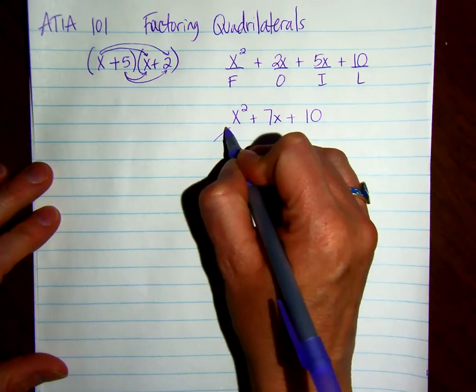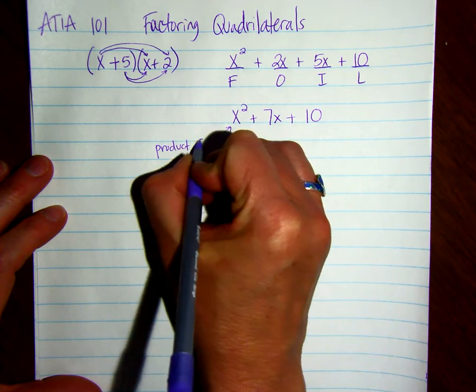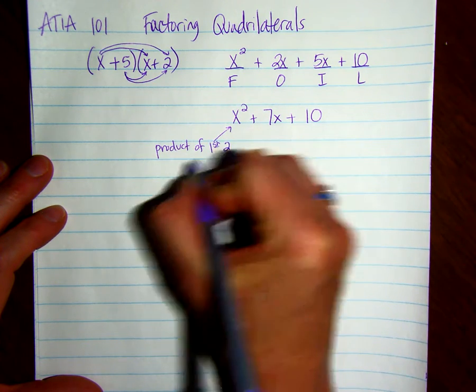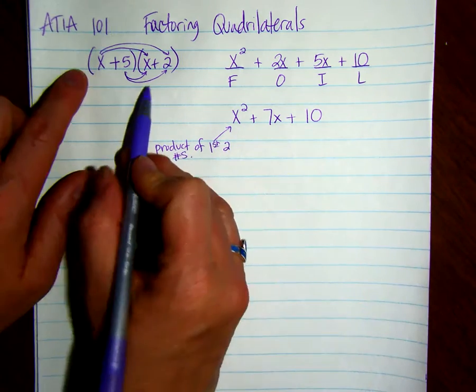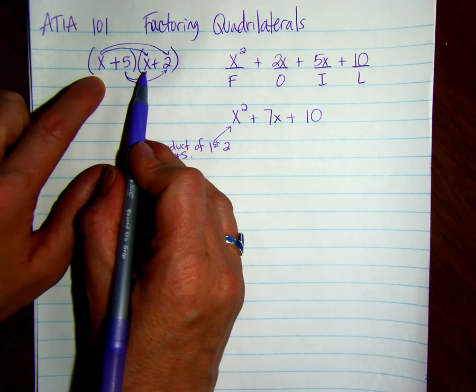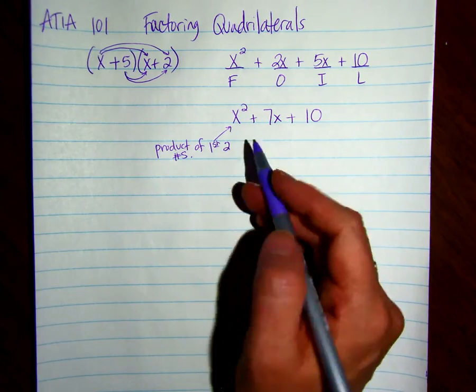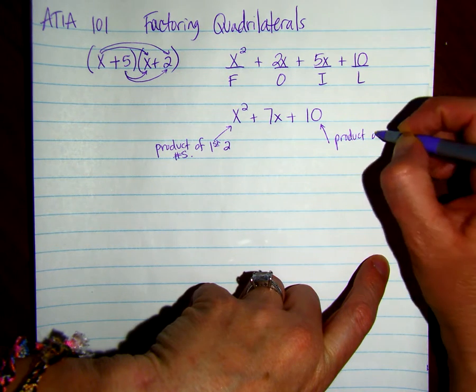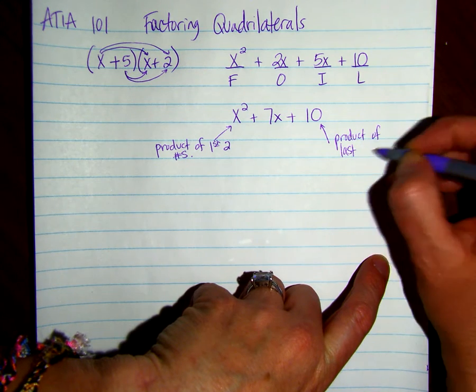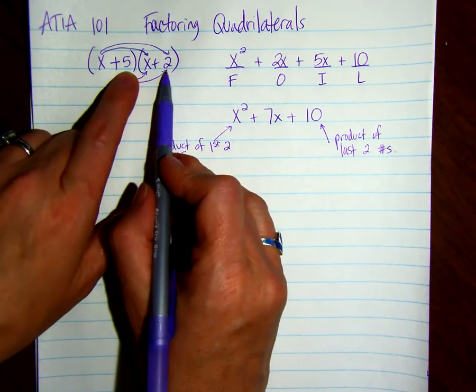This first term is the product of the first two numbers, so the first numbers within our parentheses. Then this one is the product of the last two numbers.